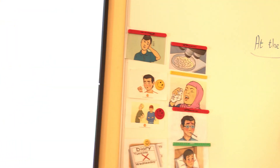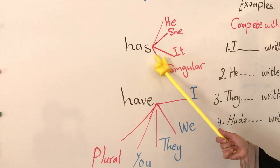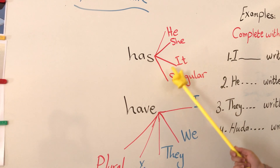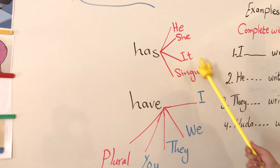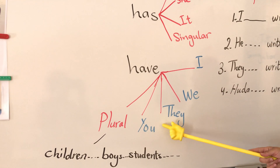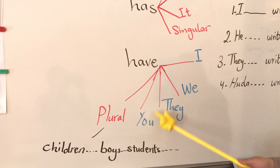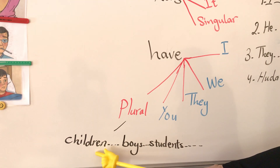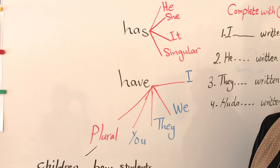Before doing Question 3 on the same page, let's revise the use of 'has' and 'have'. 'Has' goes with some pronouns: he has, she has, it has. Also with singular nouns, like 'the man has' or 'Mona has'. 'Have' goes with I, we, they, you — so we say: I have, we have, they have, you have. It also goes with plural nouns like 'the children have', 'the boys have', 'the students have'.